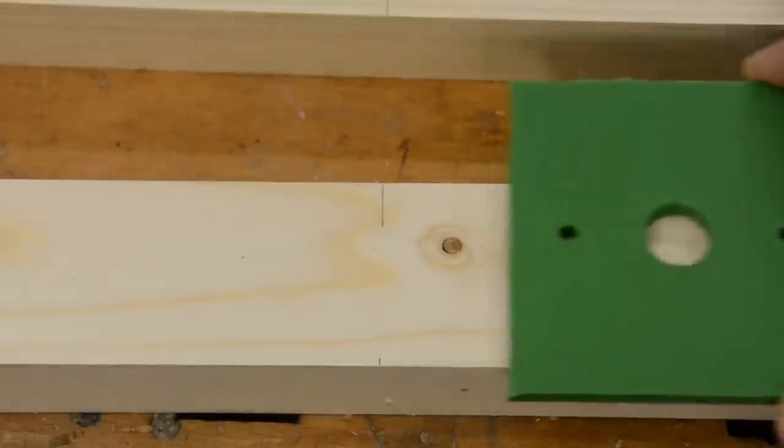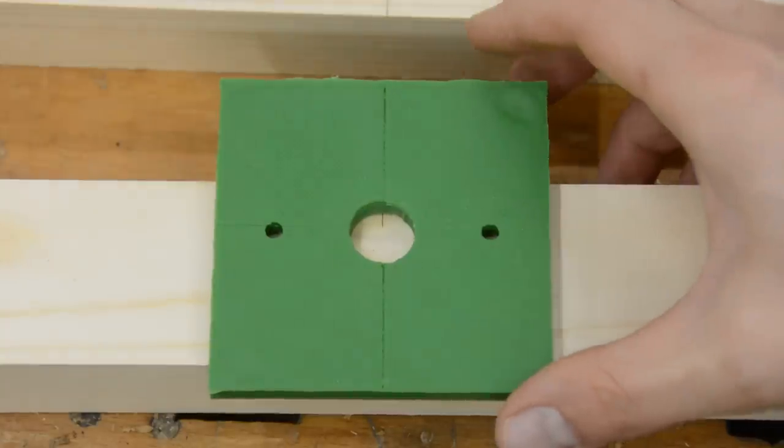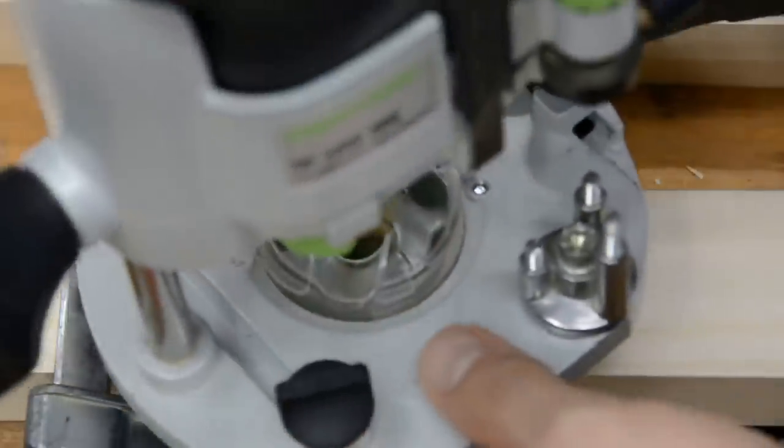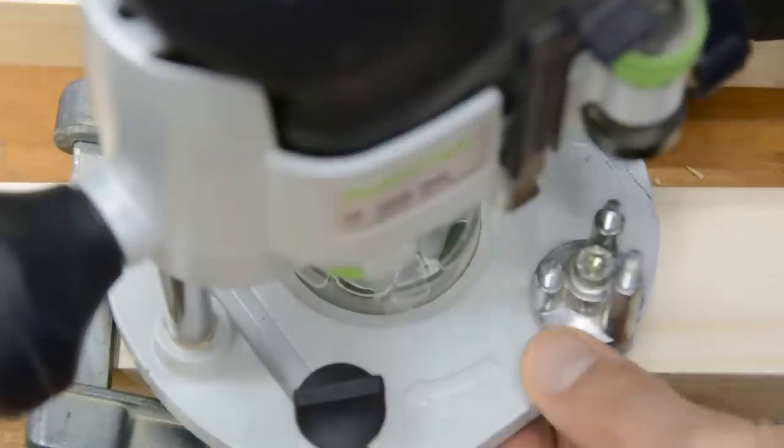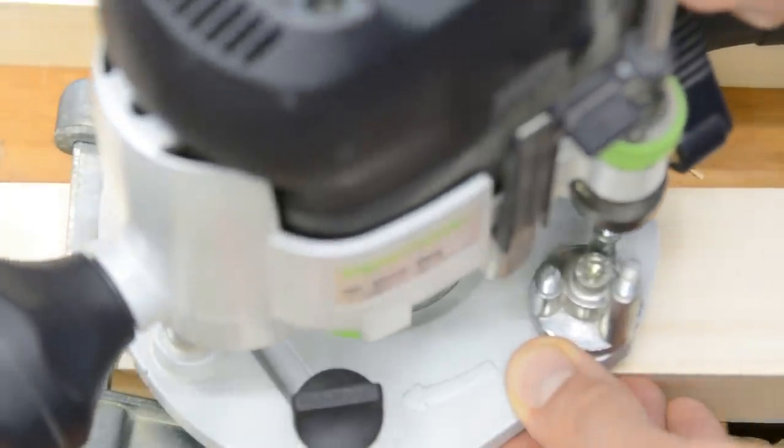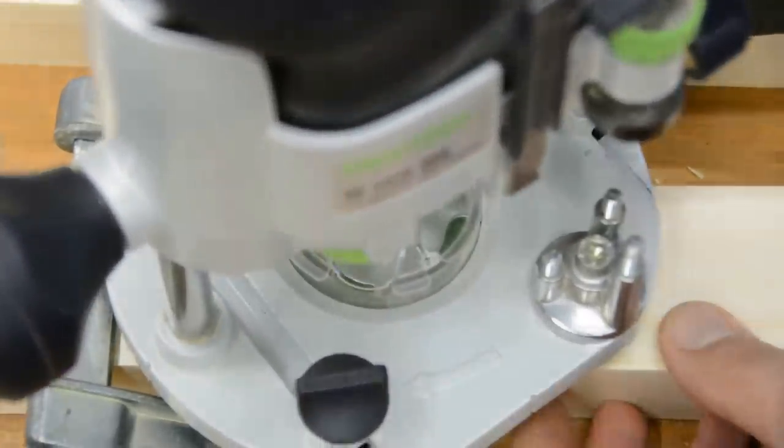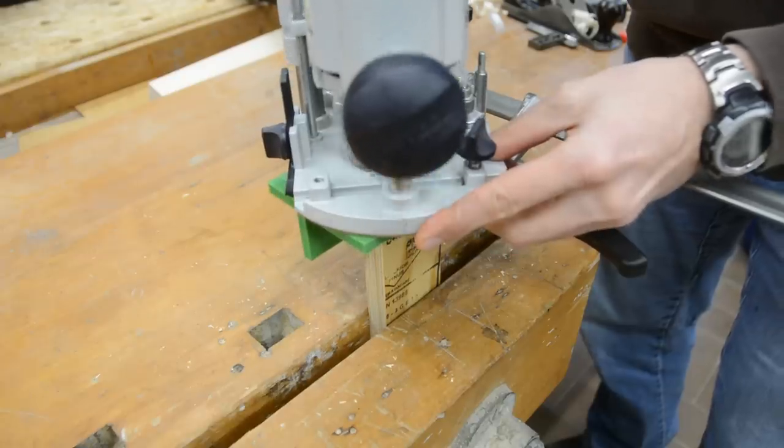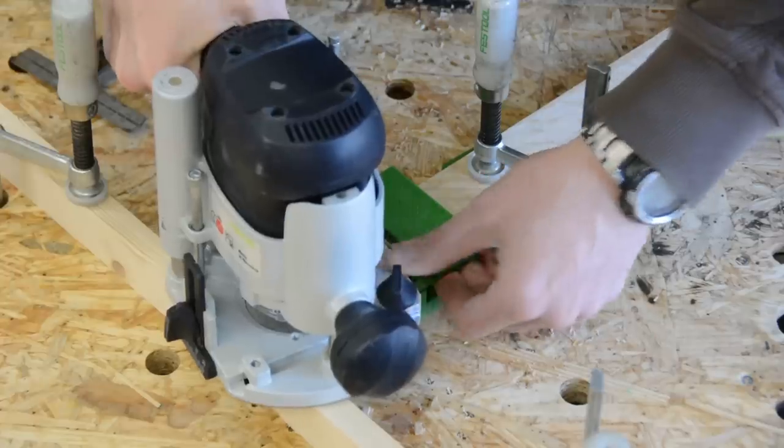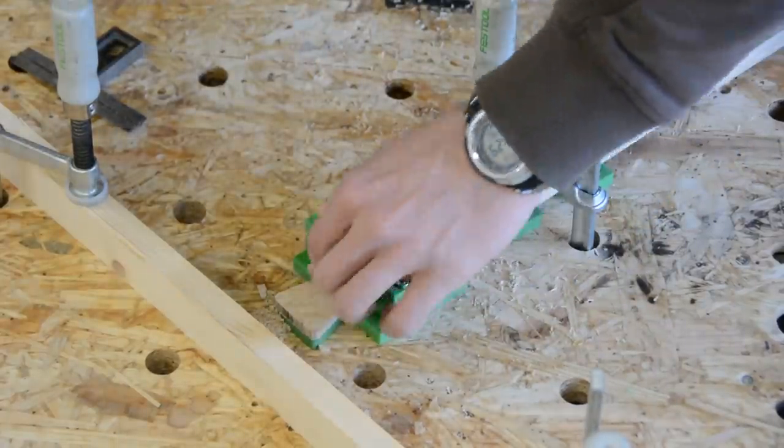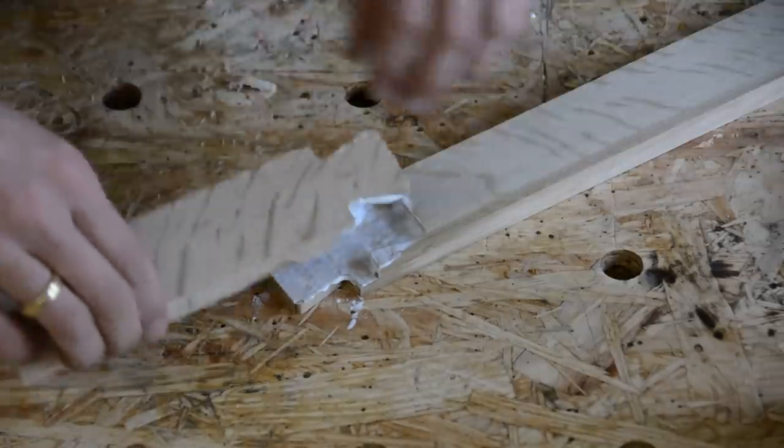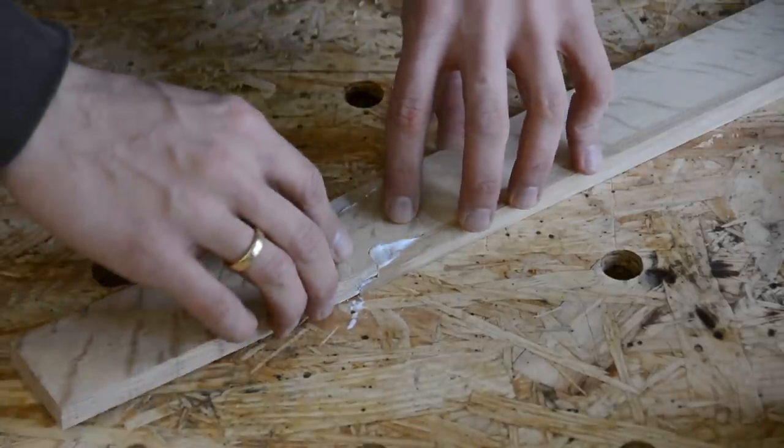Number 2 – router guides. My number 2 is actually an entire category of 3D prints that guide my router. I use this principle a lot, be it to create a simple drill guide, to create floating tenons, or to cut very complex joinery. I have links to videos for each of those jigs in the description.